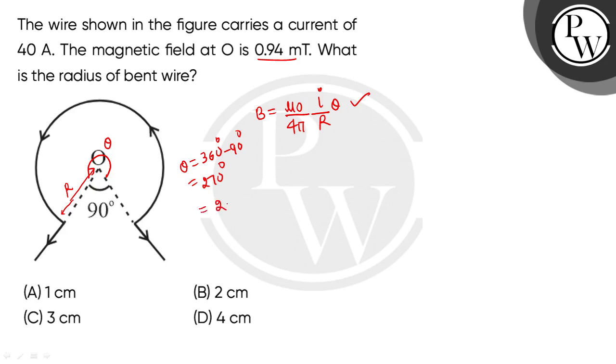To convert to radians, multiply 270 degrees by pi over 180, giving us 3 pi over 2 radians.